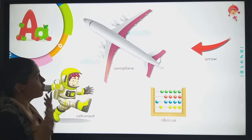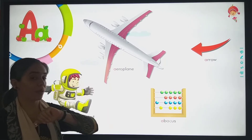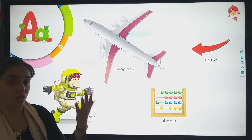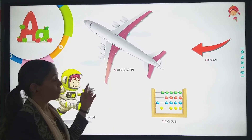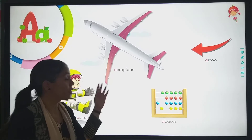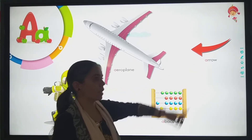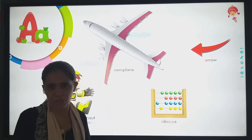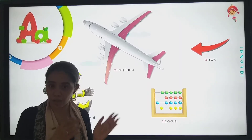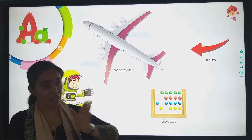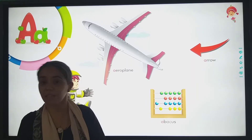A se aur kya kya hota hai bacho? A for aeroplane. Hame ki dhar bahar jana hota hai out of India, toh hum kaise jayenge? We will go through aeroplane. Then A for arrow. Agar hume left jana hai, right jana hai, toh hume kaise pata chalega?